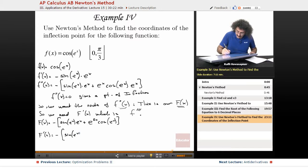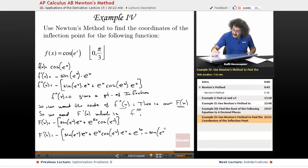Minus sin e to the x times e to the x times e to the x, cosine e to the x, e to the x, plus e to the 2x times minus sine e to the x times e to the x, plus cosine of e to the x times e to the x. So I have my f and I have my f prime.